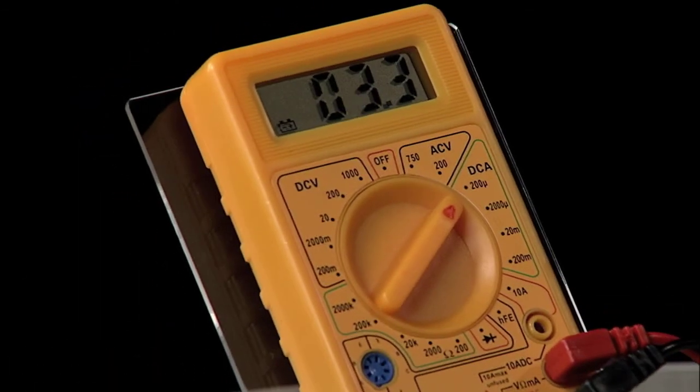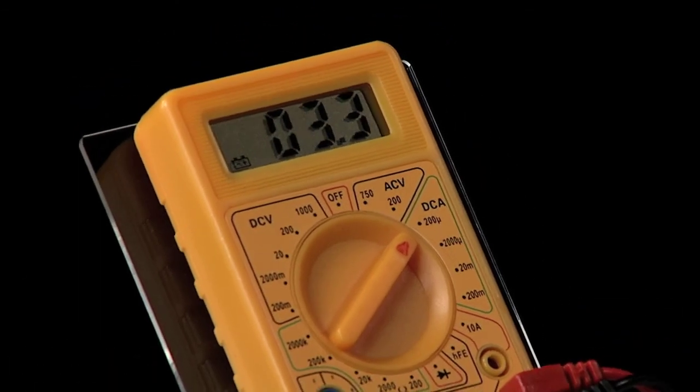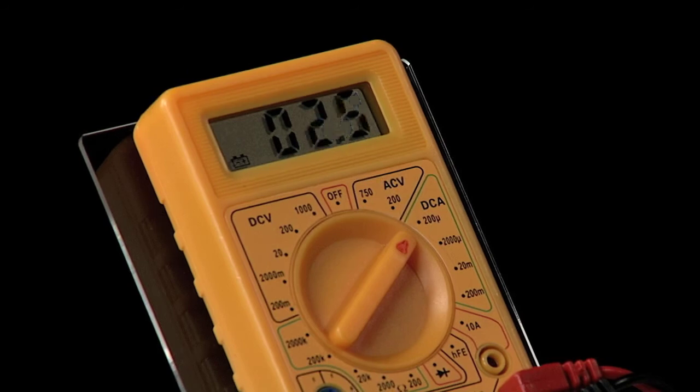That value is the time that it takes to turn the clock on, set the reference, and actually do the measurement before we go back to sleep. So in this case, we're getting something like a 2.2 microamp current for the majority of that 2 second time, for the majority of the time period.